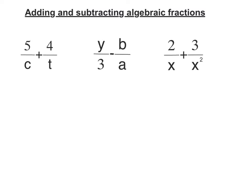So for this first one here, we've got 5 over C plus 4 over T. The lowest common denominator of C and T is CT. So to get my common denominators of CT, the first fraction I'm going to have to multiply by T and the second fraction multiplied by C. Remember, I do that to top and bottom. So 5 times T is 5T and 4 times C is 4C.